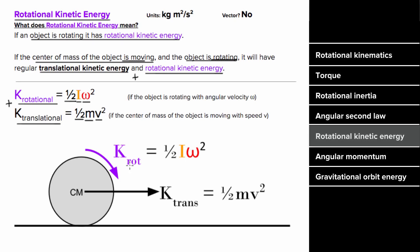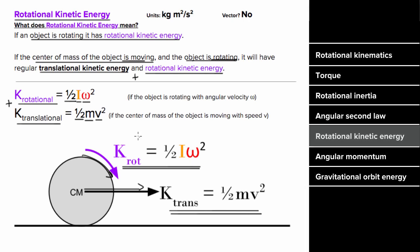If an object is rotating, it has rotational kinetic energy. If the center of mass is moving, it has translational kinetic energy. If both, it has both. Rotational kinetic energy is not a vector — it's always positive or zero — and the units are joules (kg·m²/s²).